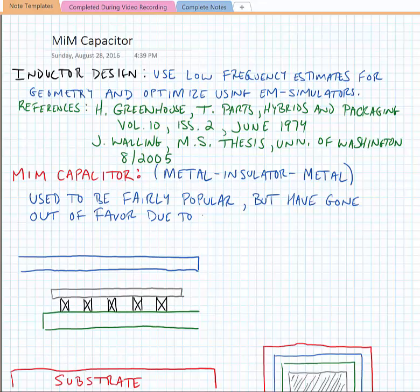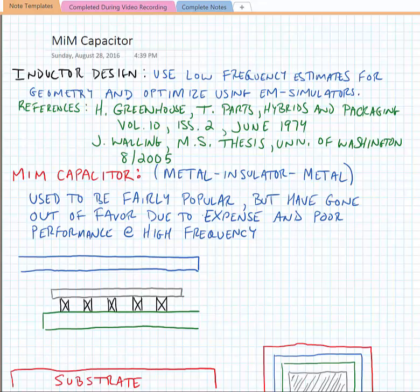So MIM capacitors are metal insulator metal capacitors and they used to be fairly popular in RF CMOS processes but have gone out of favor due to their expense and their poor performance at high frequency and also because they're using a relatively thin oxide they're more susceptible to electrostatic damage.